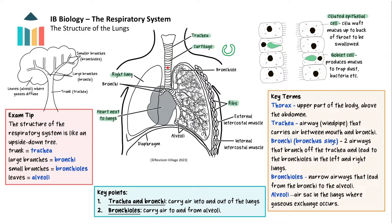The trachea then branches into the left and right bronchi — one on its own would be called a bronchus. The bronchi lead into the left and right lungs. The bronchi branch into bronchioles, and as these structures get narrower and narrower the cartilage becomes more and more irregular and eventually disappears. At the end of the smallest bronchioles are the alveoli, tiny air sacs where gaseous exchange occurs.